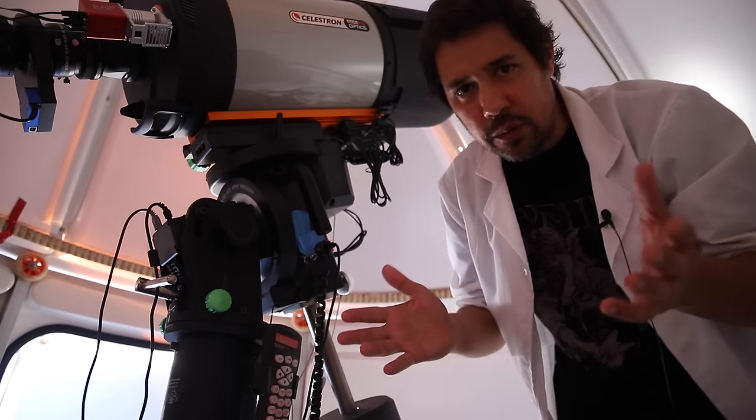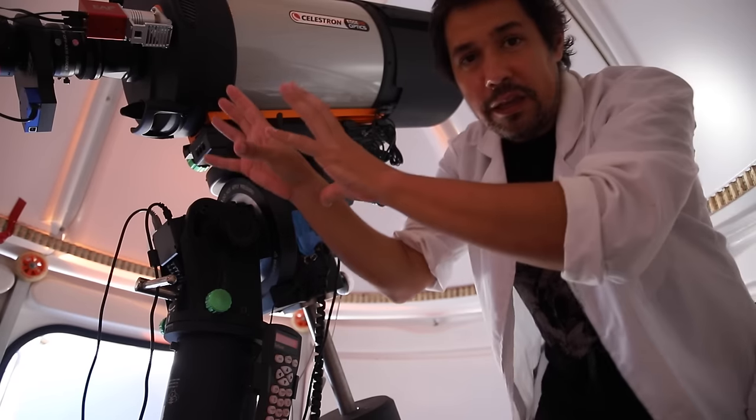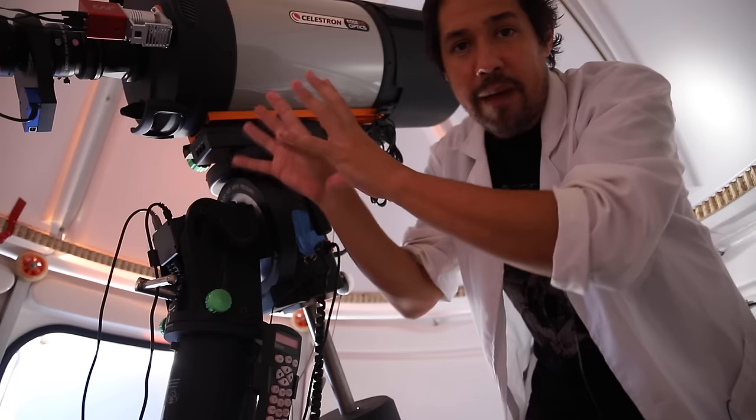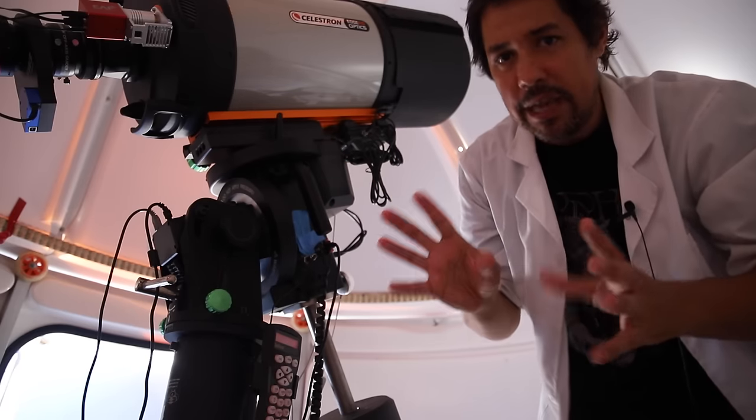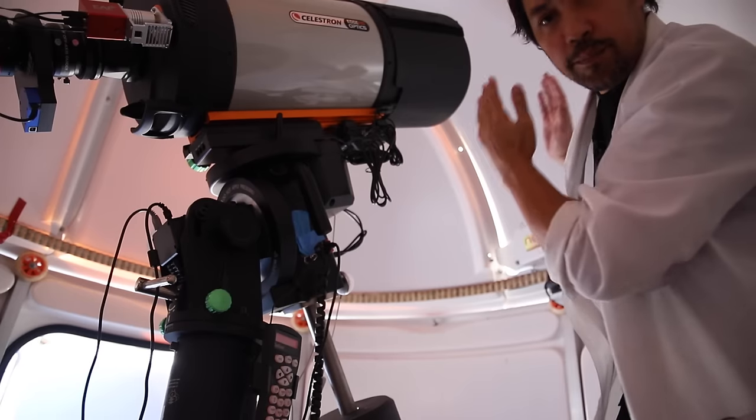So what I tend to do is just shoot the flats exactly where the telescope is parked in the observatory. Now you might not have that situation, so you can just take your telescope inside. As long as you don't move anything, as long as you don't touch anything on the camera or the rotation or anything like that, keep the same gain, keep the same temperature when you're shooting the flats and just shoot something blank.